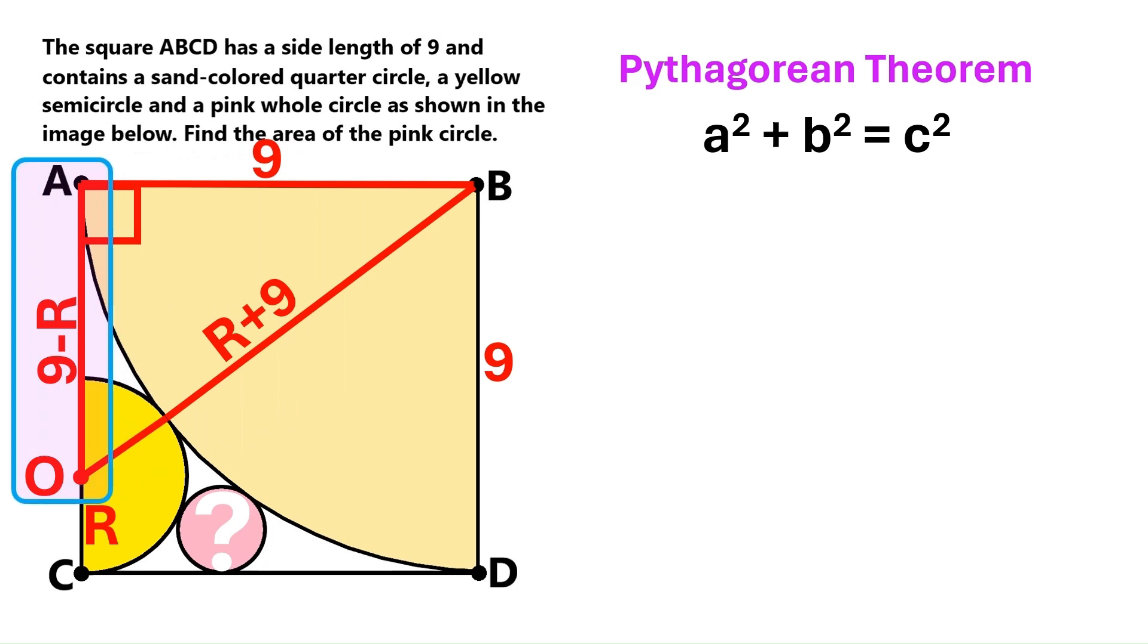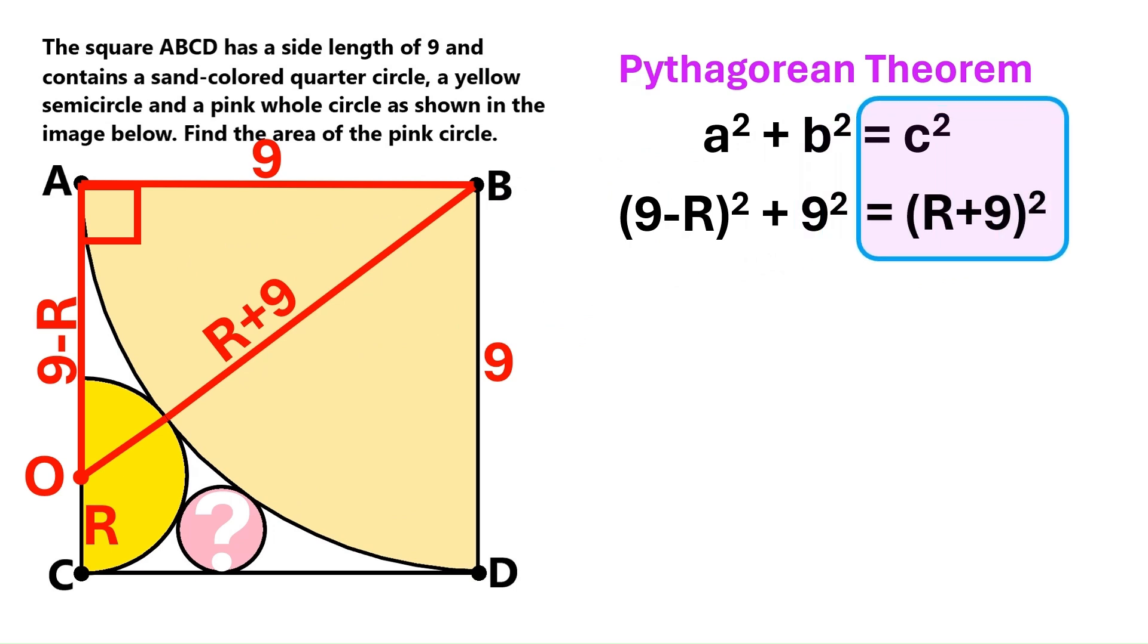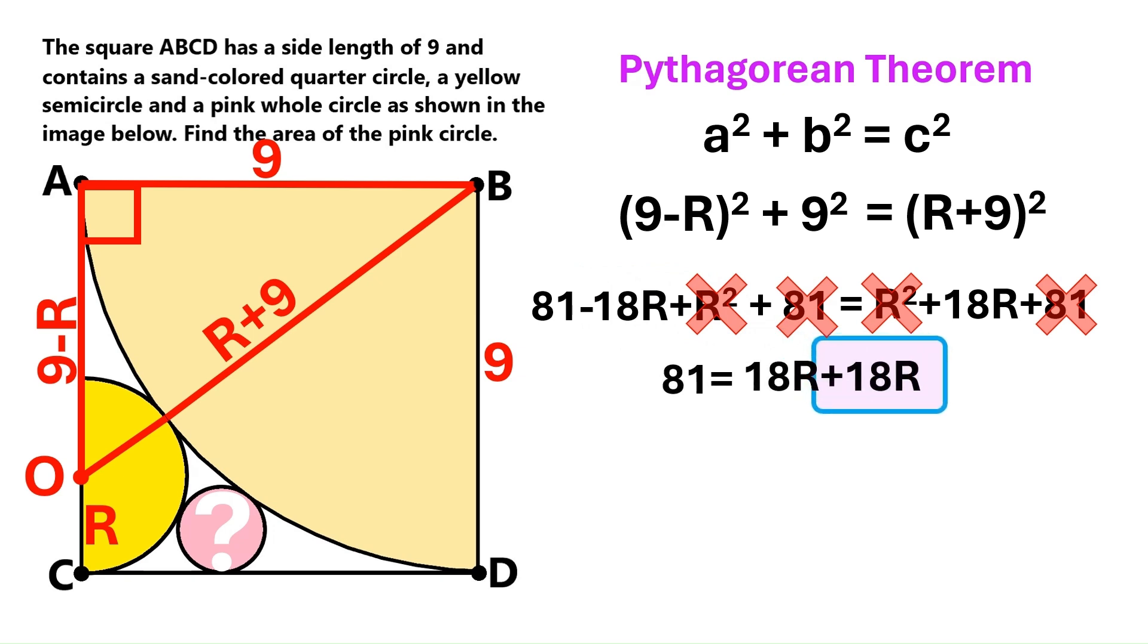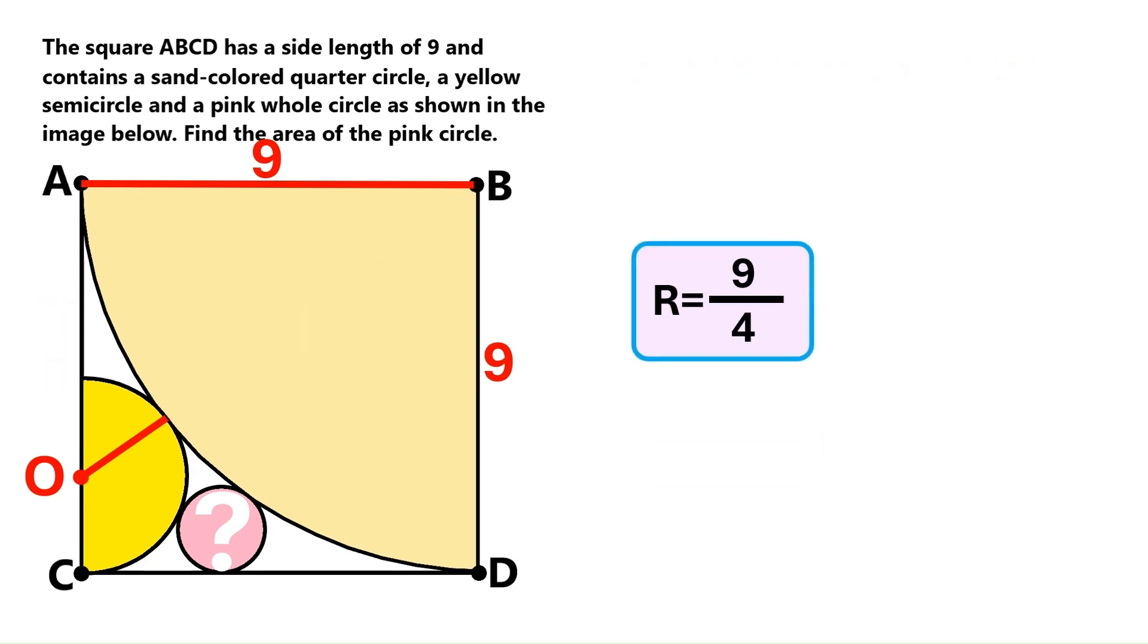One of the legs is 9 minus capital R. Let's take the square of that. The other leg is 9. So let's take the square of that as well. The hypotenuse is capital R plus 9. We take the square of that too. Next we open up the brackets. This becomes 81 minus 18 capital R plus capital R squared. And 9 squared is 81. On the other side of the equation we got capital R squared plus 18 capital R plus 81. Let's cancel out the capital R squared on both sides. Let's also cancel out 81's on both sides. Next we take this minus 18 capital R to the other side, and it becomes plus 18 capital R. This side adds up to 36 capital R. So capital R is 81 over 36, which equals 9 over 4. Let's keep this important finding here.